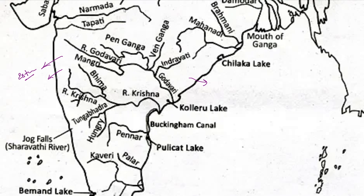The main rivers that flow westward are Narmada and Tapi. An important thing about Narmada is that it originates from the Amarkantak Plateau, at the border of Maikal and Satpura hills. It flows westward from there. On the west side, there is a border of Maharashtra and MP, and it also covers the Gujarat-Maharashtra border before draining into the Arabian Sea.